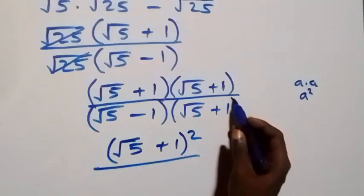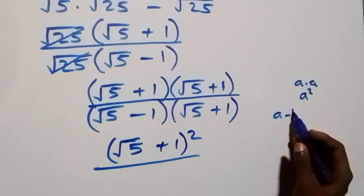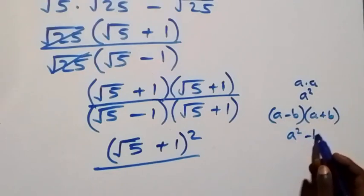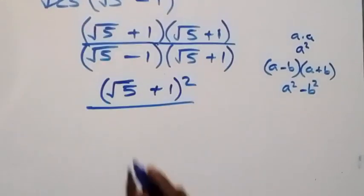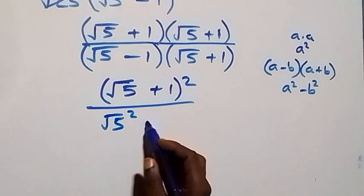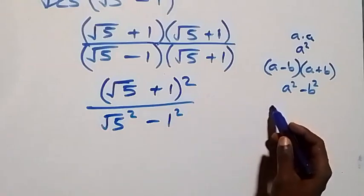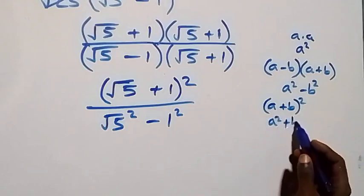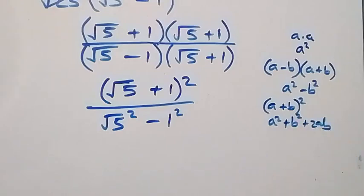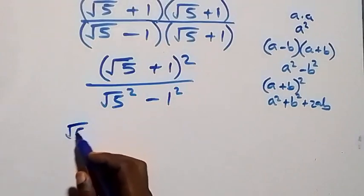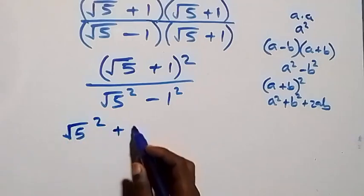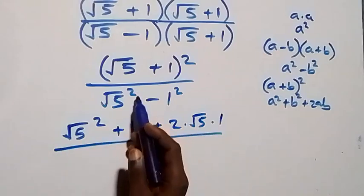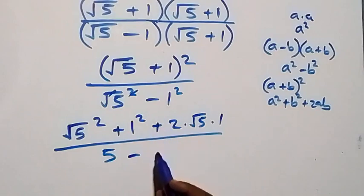The denominator follows the identity (a minus b)(a plus b) equals a squared minus b squared. So the denominator becomes root 5 squared minus 1 squared. Now expanding the numerator using (a plus b) squared equals a squared plus b squared plus 2ab, this becomes root 5 squared plus 1 squared plus 2 times root 5 times 1. Divided by root 5 squared minus 1 squared: square and square root cancel giving 5, minus 1 squared which is 1.